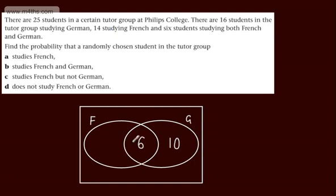14 are studying French. We've already got 6 here, so the other 8 are here. And when we look at this ellipse, we've got 14 in total.